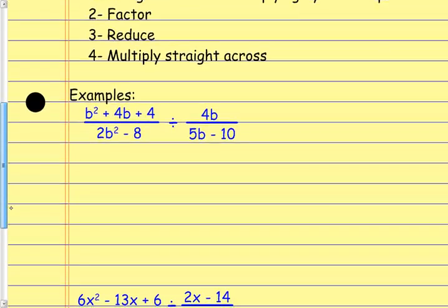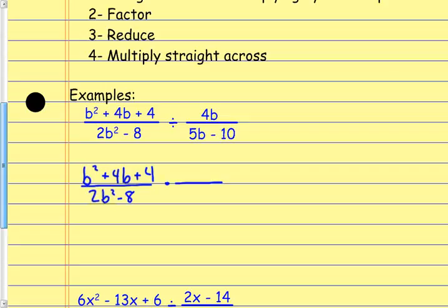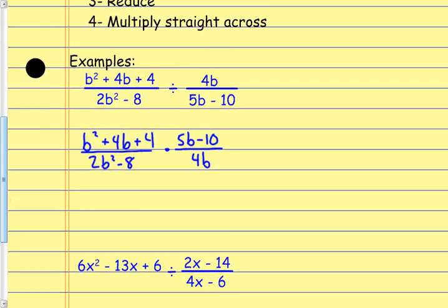For example, if I look at something like this, my first step is immediately to change this to multiplying by the reciprocal. This first fraction stays the same; I change the second fraction — instead of dividing I change it to multiplication and flip the second fraction, changing it to multiplying by the reciprocal. Now I do the same things I've been doing.